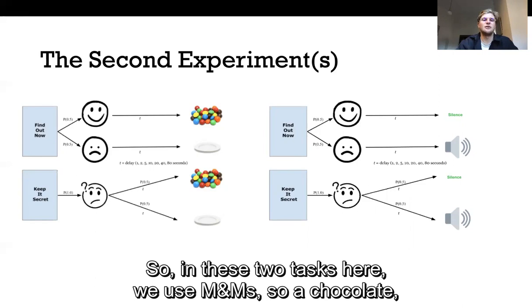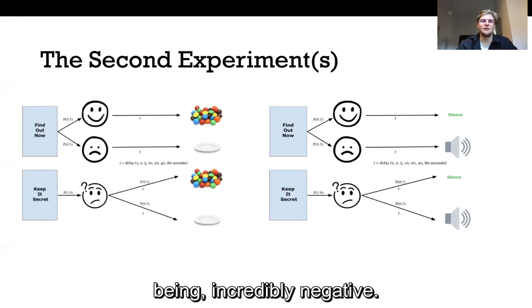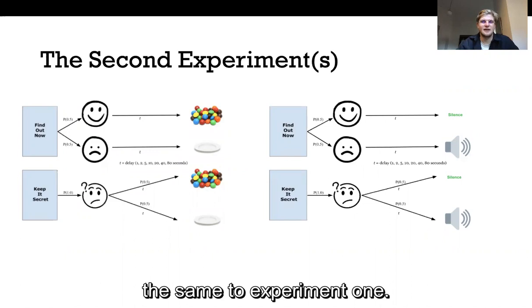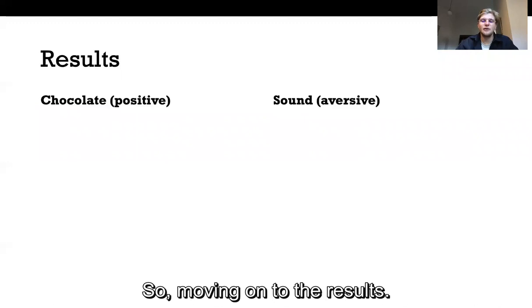So in these two tasks here we use M&Ms, a chocolate, and we also use sound and that sound was microphone feedback, a high-pitched screeching sound which people reported as being incredibly negative. These two conditions were not run within participants like the previous experiment due to different programs and setups but every other aspect of the task remained the same as experiment one. Everything was the same just apart from this change of what the actual reward or the negative event was.